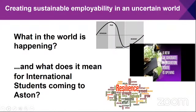We currently face global recessionary conditions, which will pass at different paces throughout the world. On a positive note, in the UK the new graduate immigration route — or graduate route — started this September, allowing international students not just to work on their Tier 4 student visa, but to continue and remain in the UK for up to two years after that visa ends. This provides a much sought-after opportunity to look for work, gain sponsorship, and get a chance to work here in the UK.